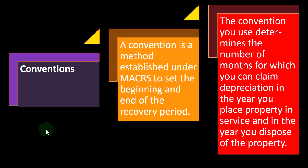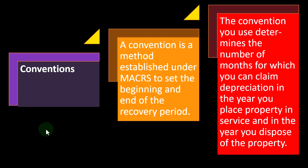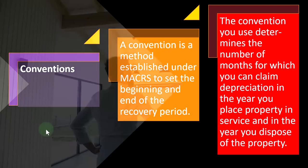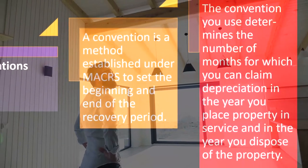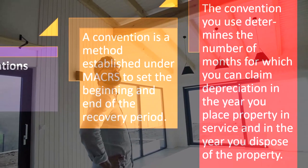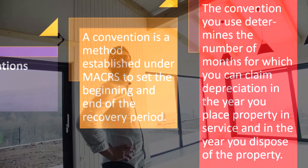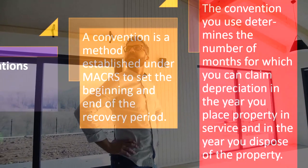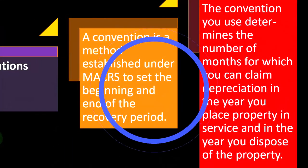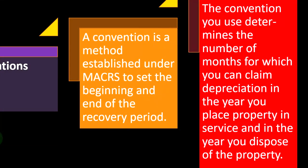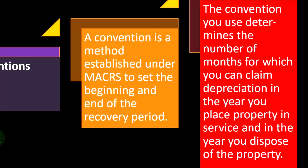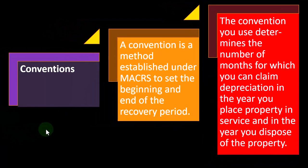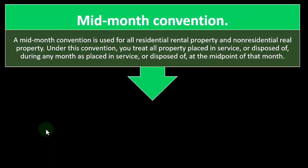The convention you use determines the number of months for which you can claim depreciation in the year you place the property in service and in the year you dispose of it. The convention is most relevant when we put the property in service, because that's when we do the initial calculation. Software typically helps calculate the depreciation going forward, but if you used a half-year convention on entry, it would logically end on a half-year note as well.